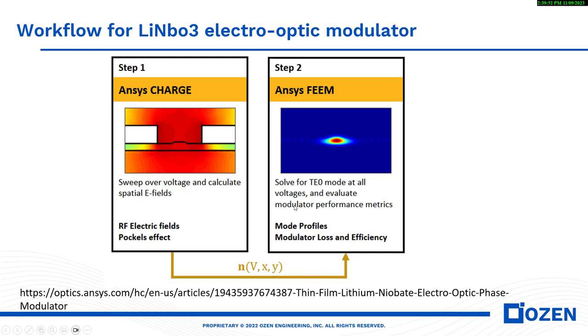The thing you can extract by this solver is N versus voltage X and Y. This value goes to ANSYS Lumerical. In ANSYS Lumerical, you can solve the TE zero mode for all voltages and evaluate modulator performance merits like loss, like modulator length.